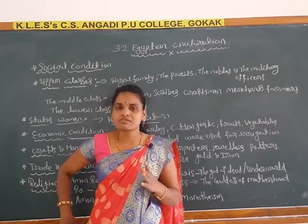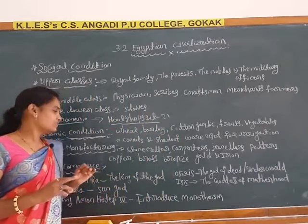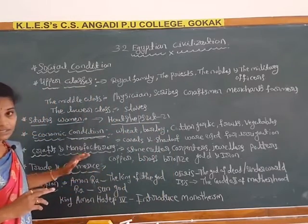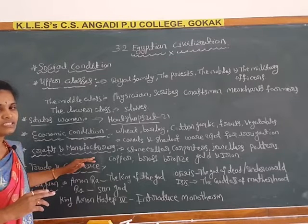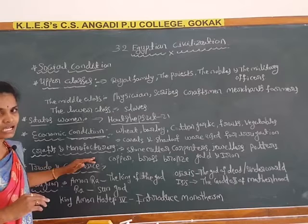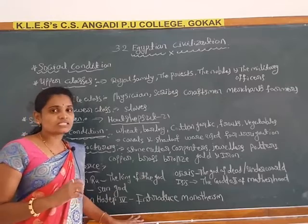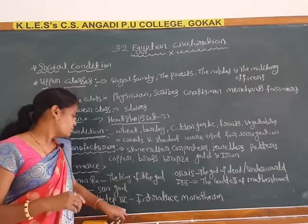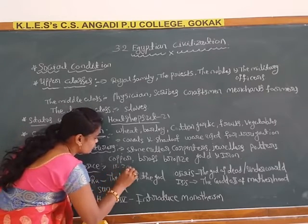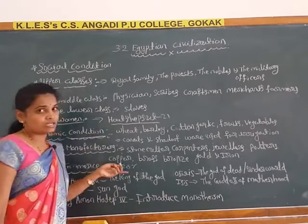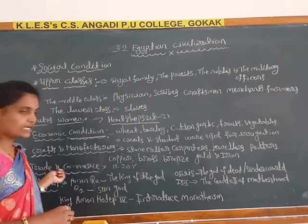They had trade relations with North Mediterranean and Asian countries. In Egyptian civilization, a taxation system also existed. They collected taxes of 15 to 20 percent of the whole income. These are the main points we consider regarding trade and commerce.